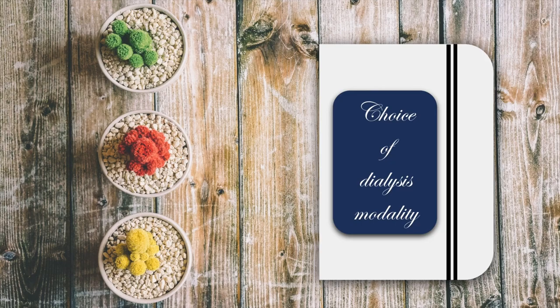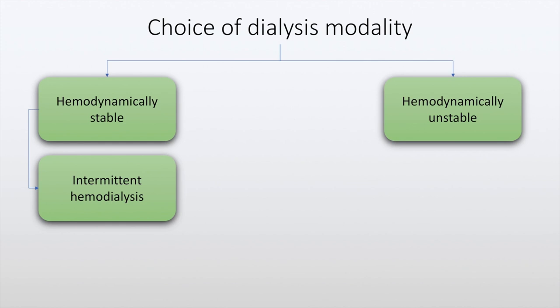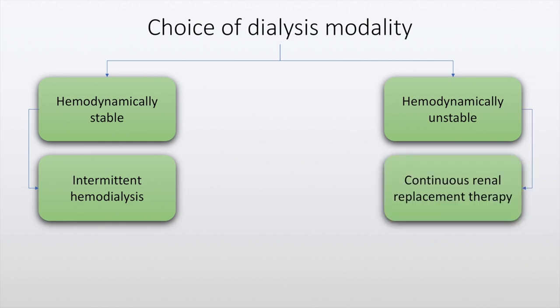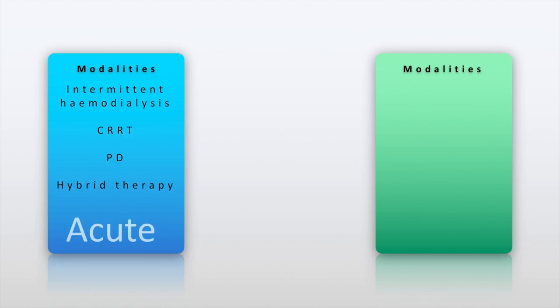The choice of dialysis modality depends upon hemodynamic stability. In patients who are hemodynamically stable, we can consider intermittent hemodialysis. And in patients who are hemodynamically unstable, we can consider continuous renal replacement therapy. The modalities may also be classified into whether the requirement for dialysis is acute, in which case we have intermittent hemodialysis, continuous renal replacement therapy, peritoneal dialysis, and hybrid therapies.